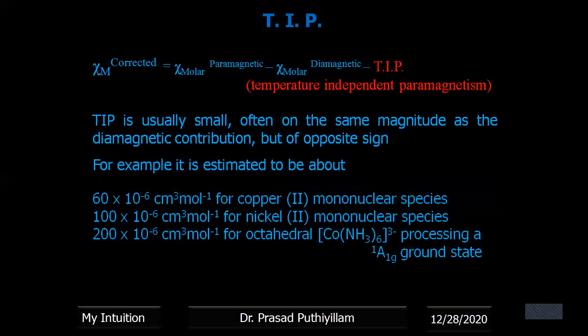For example, some other examples are: in case of copper(II) with a mononuclear species, the TIP or temperature independent paramagnetism value is 60 × 10⁻⁶. In case of nickel(II) mononuclear species, it is 100 × 10⁻⁶. In case of octahedral hexamine cobalt with a ground state of ¹A₁, it values 200 × 10⁻⁶ cubic centimeter per mole.